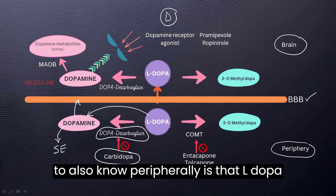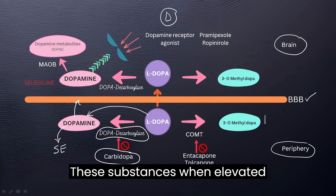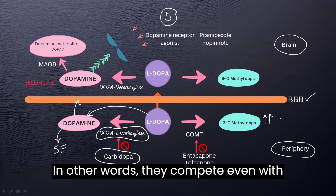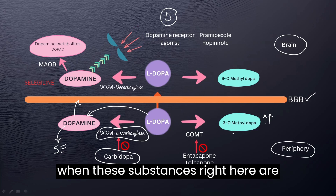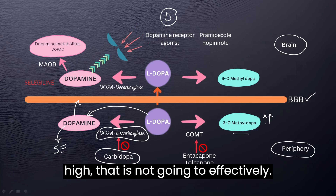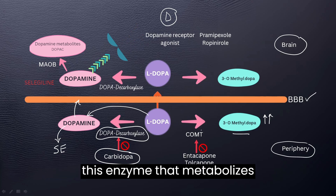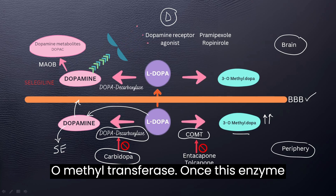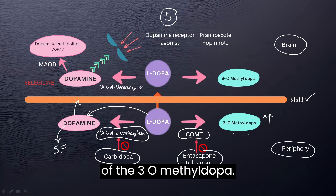Another thing to know peripherally is that L-dopa can also be metabolized into 3-O-methyl-dopa. These substances, when elevated, are partial agonists with L-dopa — in other words, they compete with L-dopa for certain receptors. So when these substances are high, that is not going to effectively allow L-dopa to cross into the central nervous system. We must block the enzyme that metabolizes L-dopa into 3-O-methyl-dopa, called catechol-O-methyltransferase (COMT). Blocking it with entacapone or tolcapone will lead to less formation of 3-O-methyl-dopa.